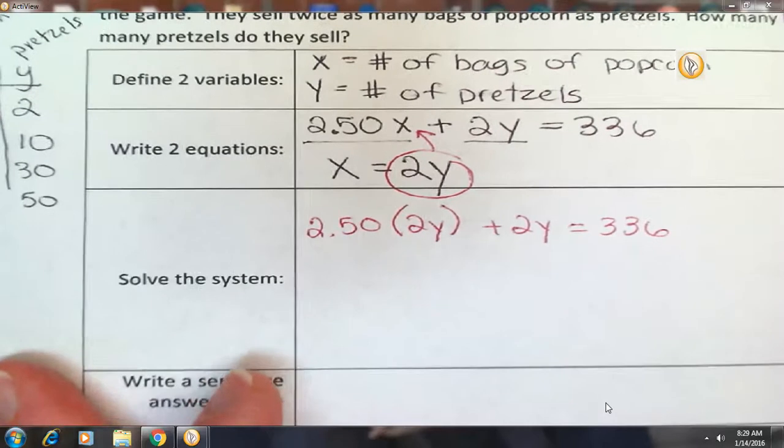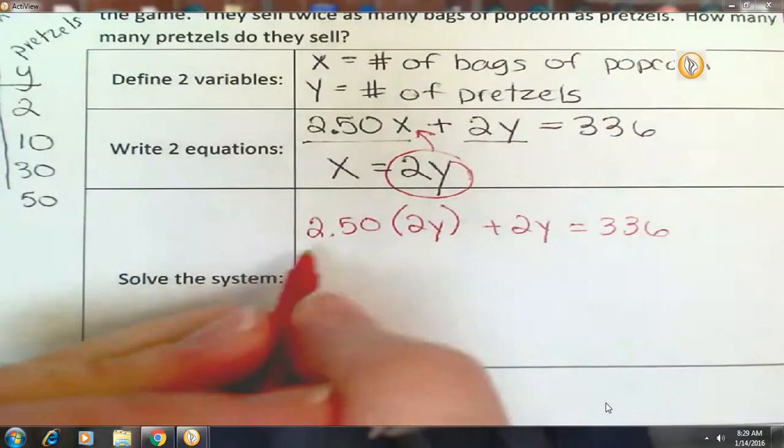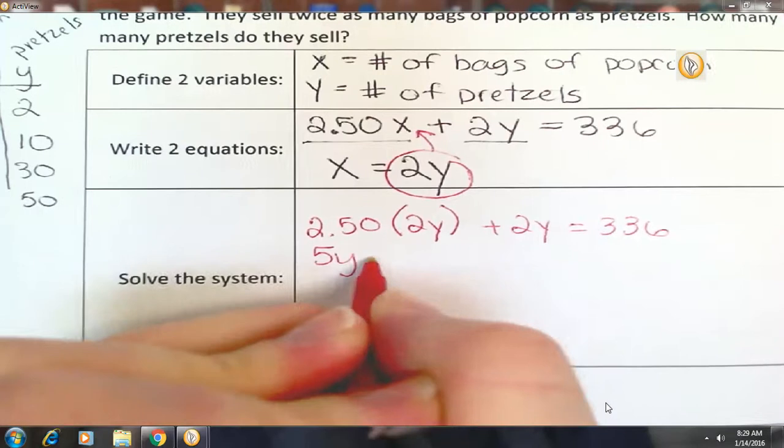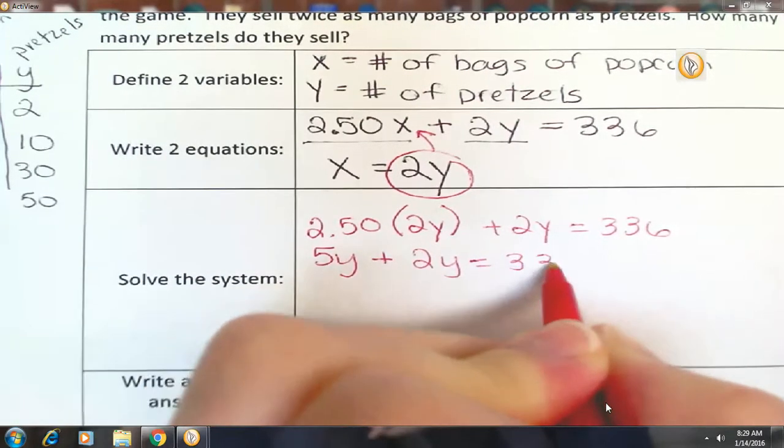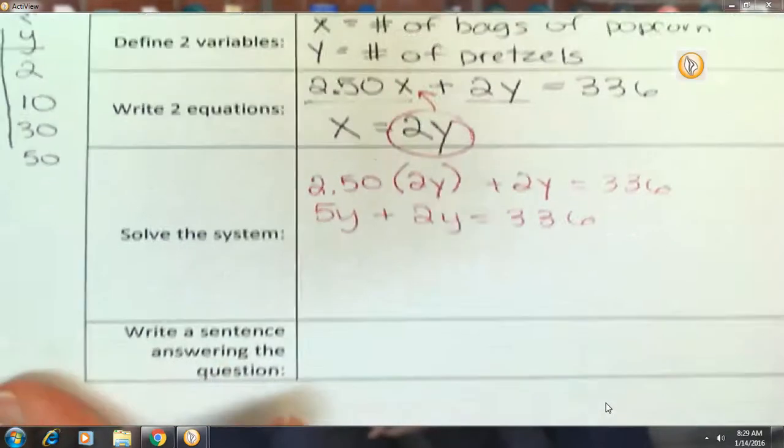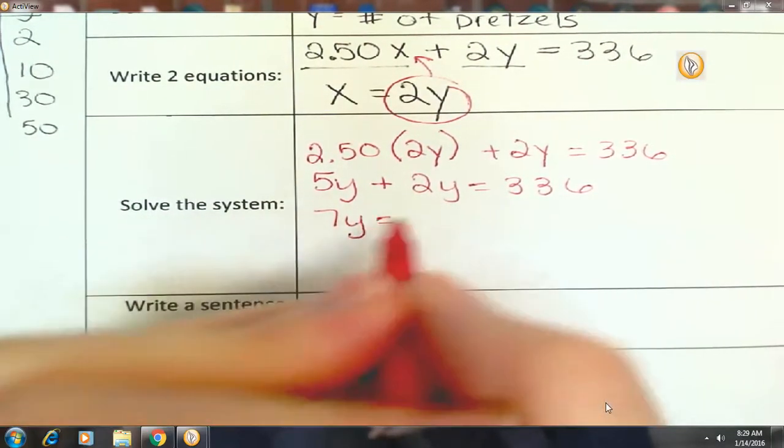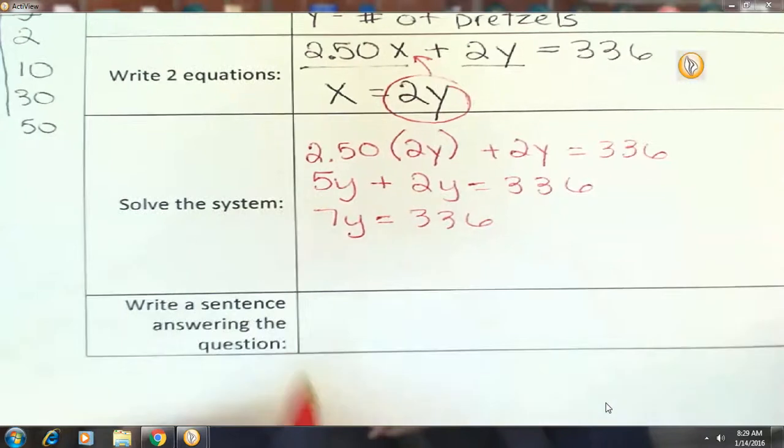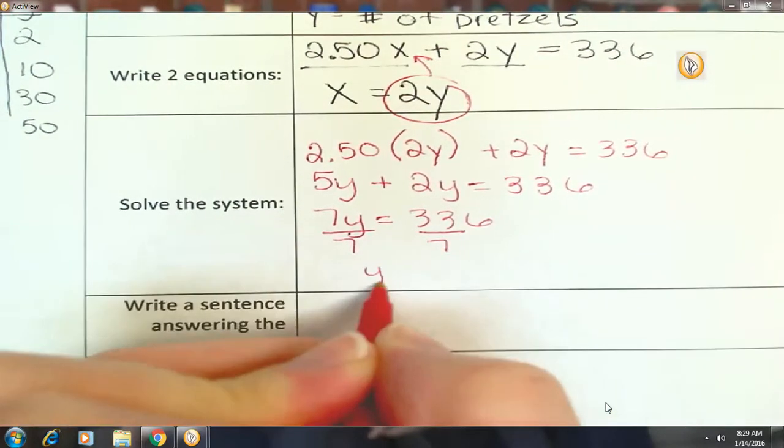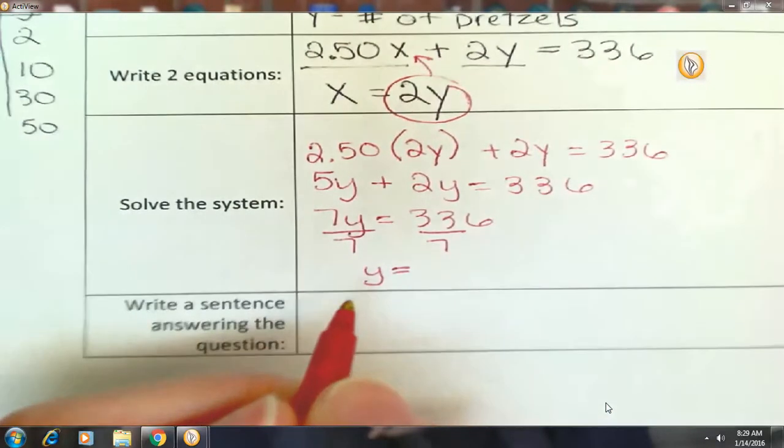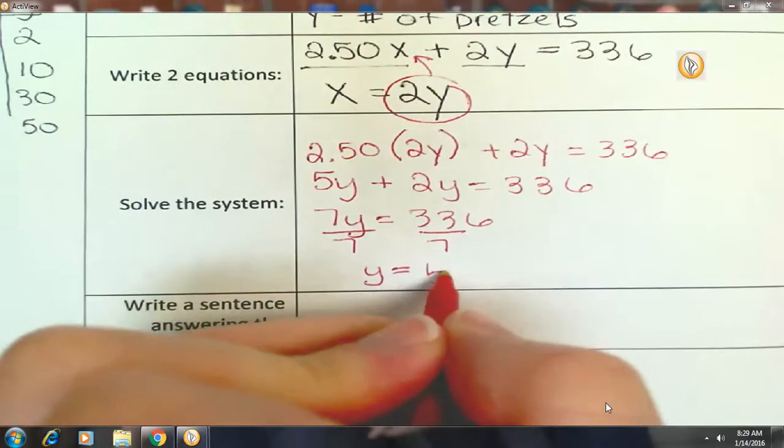So 2.5 times 2 is 5. 5Y plus 2Y equals 336. 5Y plus 2Y is 7Y equals 336. We'll divide by 7. 336 divided by 7 is how much? 48. Thank you. 48.